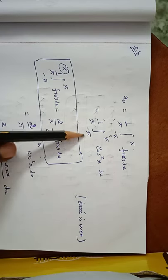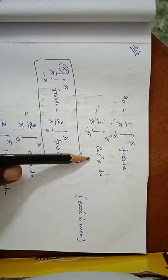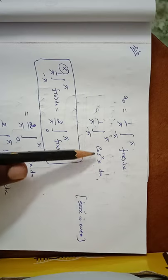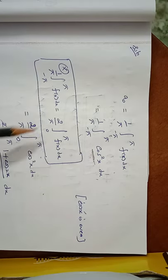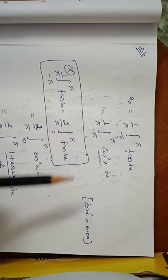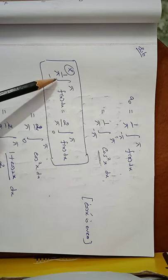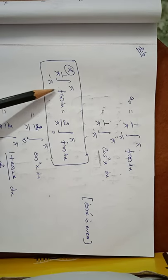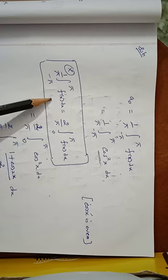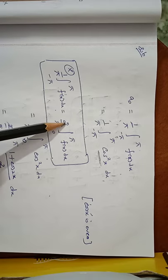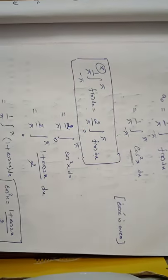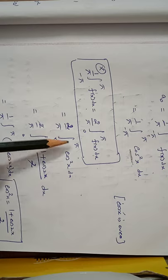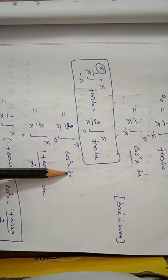So (1/π) times the integral from minus π to π of cos²x dx. Since cosine is always an even function, applying the property of definite integrals, the integral from minus π to plus π of f(x) dx can be taken as 2 times the integral from 0 to π. So we get (2/π) times the integral from 0 to π of cos²x dx.